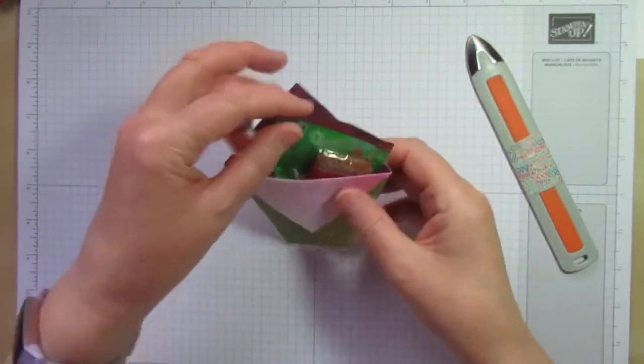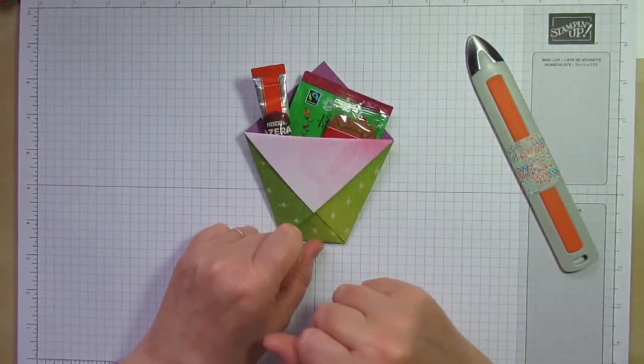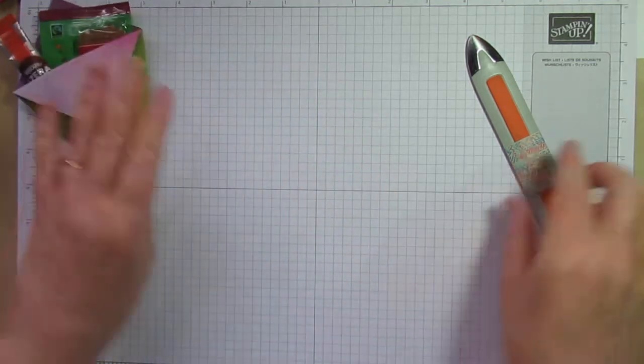And I'm going to pop in my tea bag and my little coffee stick plus my biscuit and that's my pouch done and then I just need to stamp my sentiment for the front of there.